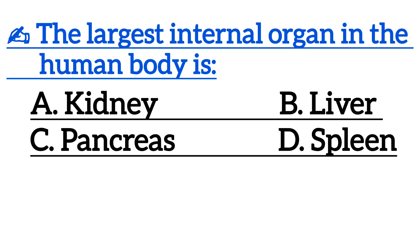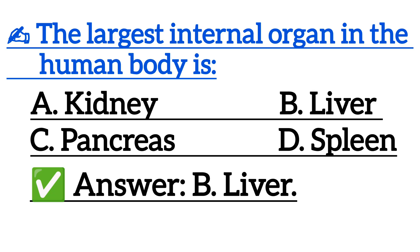The largest internal organ in the human body is — correct answer is option B: liver.